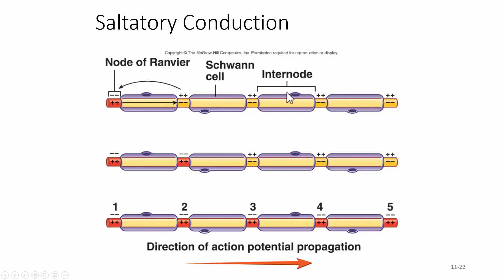Those gaps are called the nodes of Ranvier. The myelin layer prevents the movement of sodium and potassium ions through the axon membrane, so the impulse jumps from node to node. This process is called saltatory conduction — think of somersaulting from node to node. This propagates the action potential in one direction, but much faster.